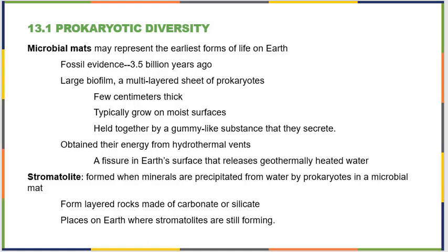Microbial mats may represent some of the earliest life forms on earth. We have fossil evidence for them existing about 3.5 billion years ago. They formed a large biofilm — a few centimeters thick, multi-layered sheet of prokaryotes that typically grew on moist surfaces. They held themselves together with a gummy-like substance that they all secreted. We think they obtained their energy from hydrothermal vents, which are fissures in the earth's surface that release geothermally heated water, thanks to magma under the earth's crust.